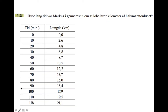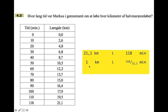Part two: how long does Marcus take on average running each kilometer of the half marathon? 118 minutes is the time it takes him for 21.1 kilometers. So one kilometer is 118 divided by 21.1 minutes, and that comes to about 5.6 minutes — every one kilometer in about 5.6 minutes.